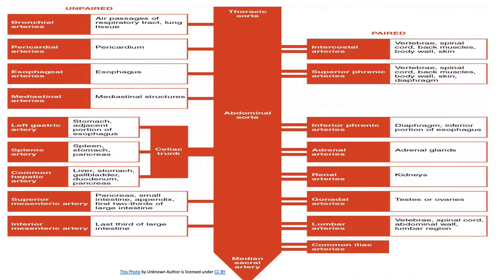The thoracic portion of the descending aorta extends from the level of T4 to T12 vertebrae. It is a continuation of the aortic arch, initially lying to the left of the vertebral column but approaching the midline as it descends. It leaves the thorax via the aortic hiatus in the diaphragm and becomes the abdominal aorta.